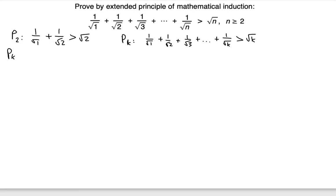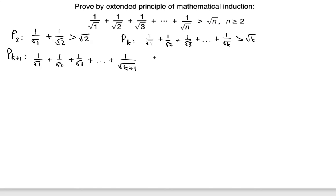And the P(k+1) statement is obtained by substituting k with k+1: 1/√1 + 1/√2 + 1/√3 + ... + 1/√(k+1) is greater than √(k+1).